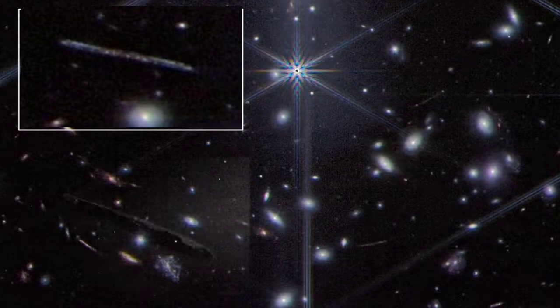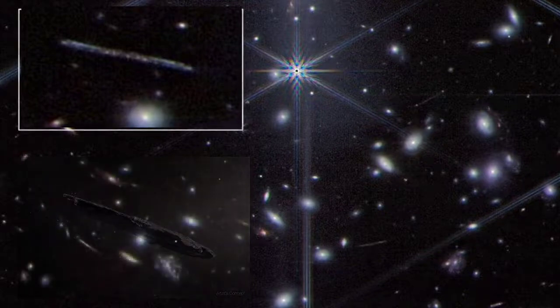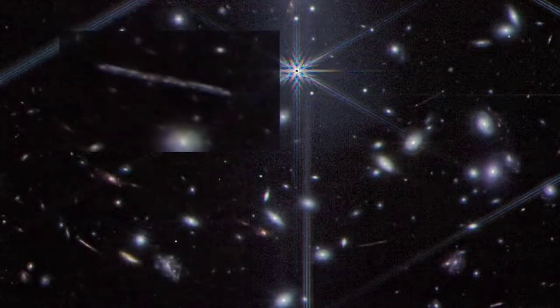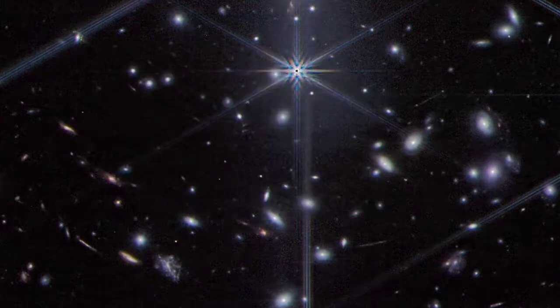It also resembles an object named Oumuamua, the solar system's first interstellar visitor. Whatever this object may be, but it looks a bit strange compared to the rest of the galaxies.